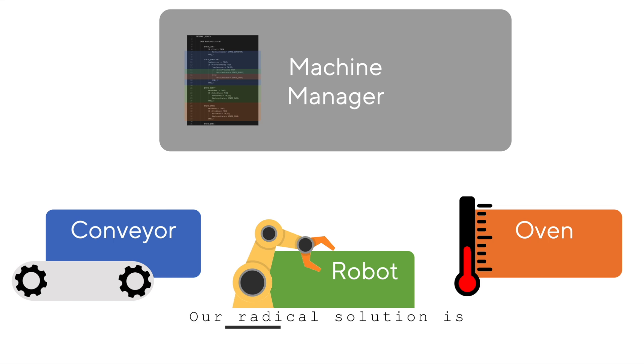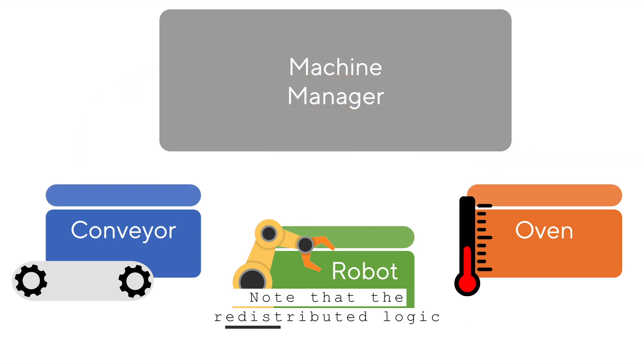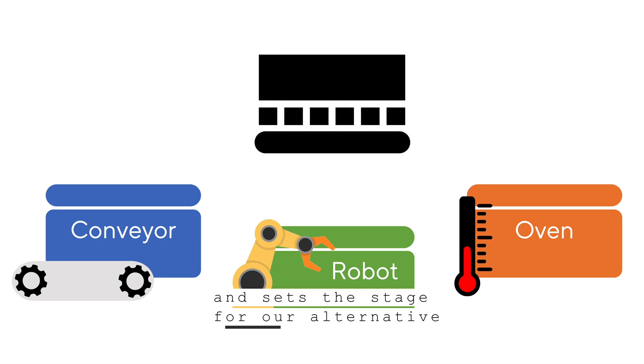Our radical solution is to remove all the component-specific logic from machine manager, and distribute each portion into its respective component. Note that the redistributed logic lives alongside the existing component logic, so there's no need to rewrite that component's logic. This flips the status quo on its head, and sets the stage for our alternative to the machine manager. We call it Piper.